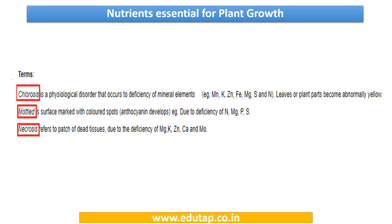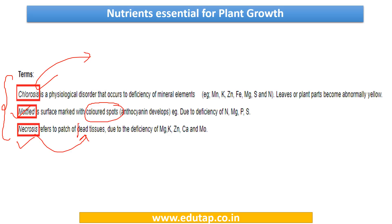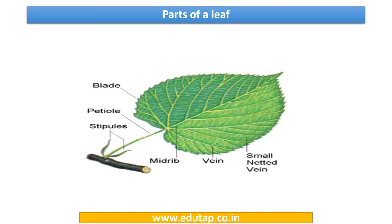We had discussed these terms before: chlorosis means yellowing; mottled means marking with colored spots due to deficiency; and necrosis is the occurrence of patches of dead tissues. We have also seen the parts of the leaf — these are the veins, this is the midrib, and the space between the veins is the interveinal space. Whenever you see the term 'interveinal chlorosis,' it refers to the space between two veins.